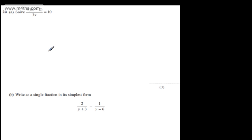This is question number 20. In part A, for three marks, we're asked to solve 4 lots of 8x minus 2 over 3x is equal to 10. The first thing I'm going to do is multiply both sides of the equation by 3x.